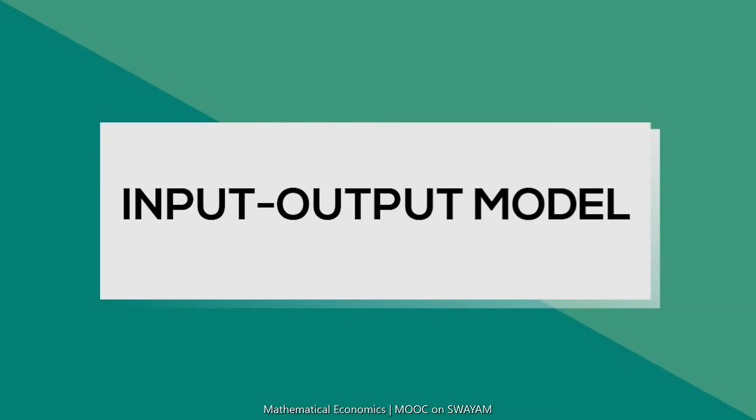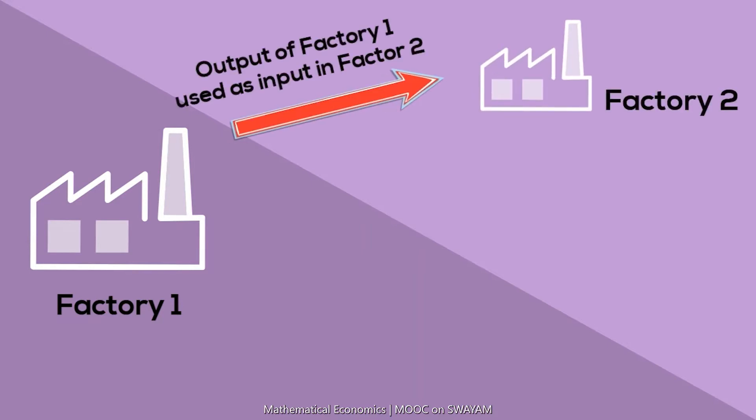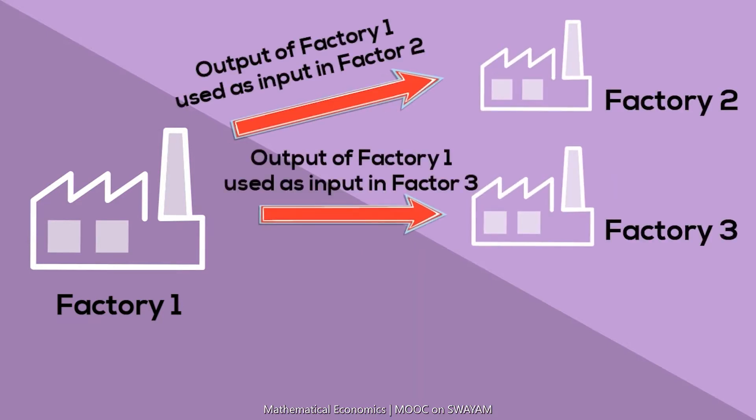The basic idea of the input-output model is that the output of one factory or industry may be used as an input in some other factory or industry, and a part of the output goes to the households for final consumption.